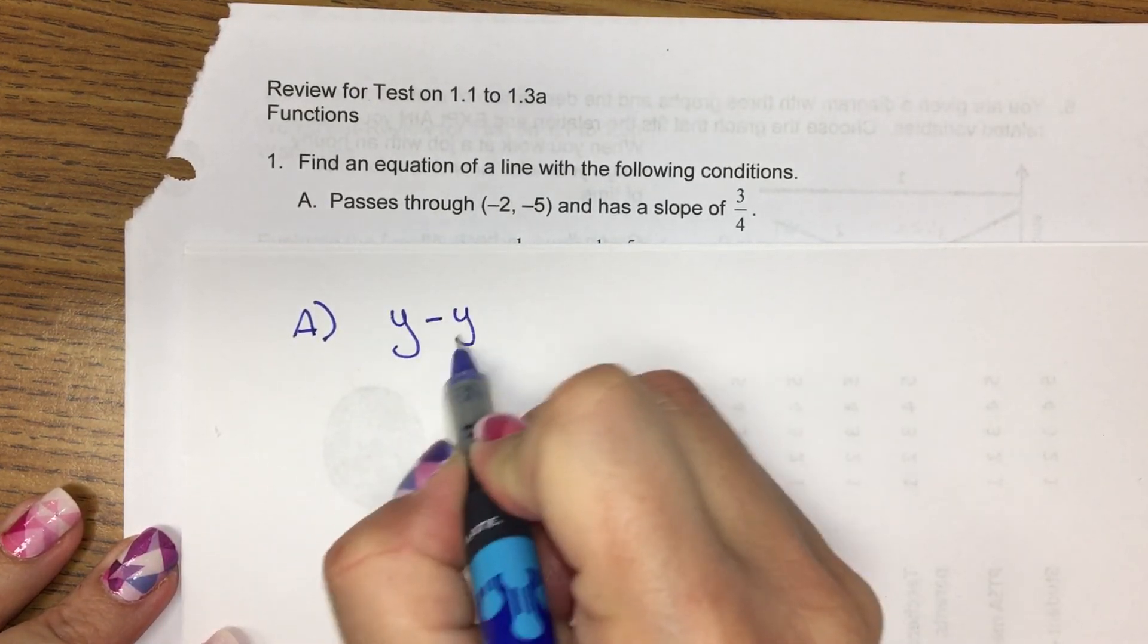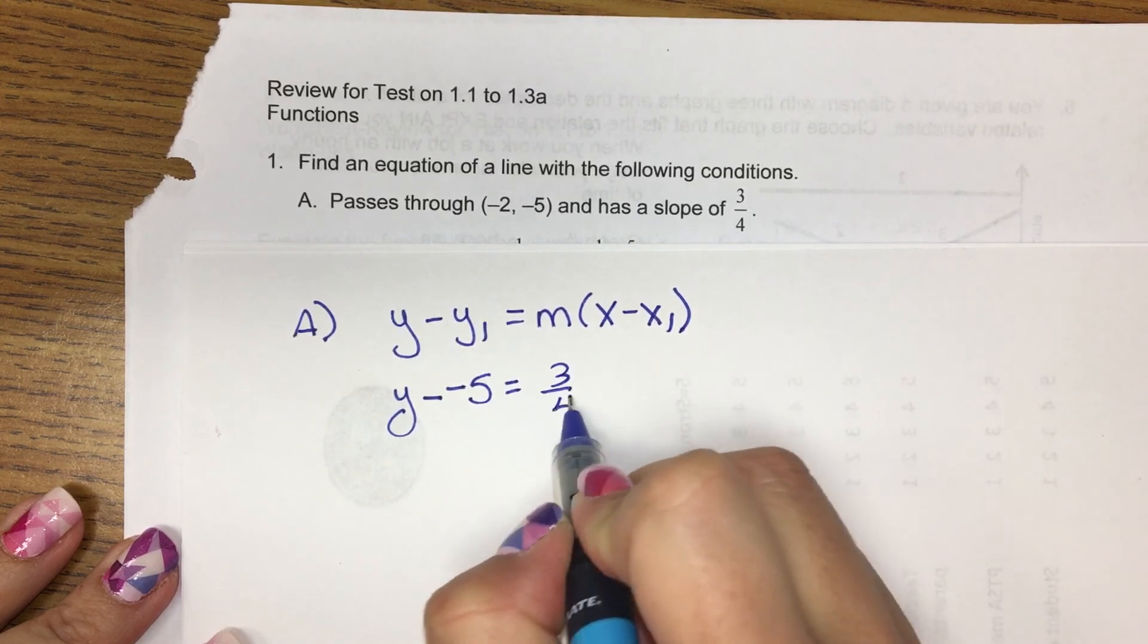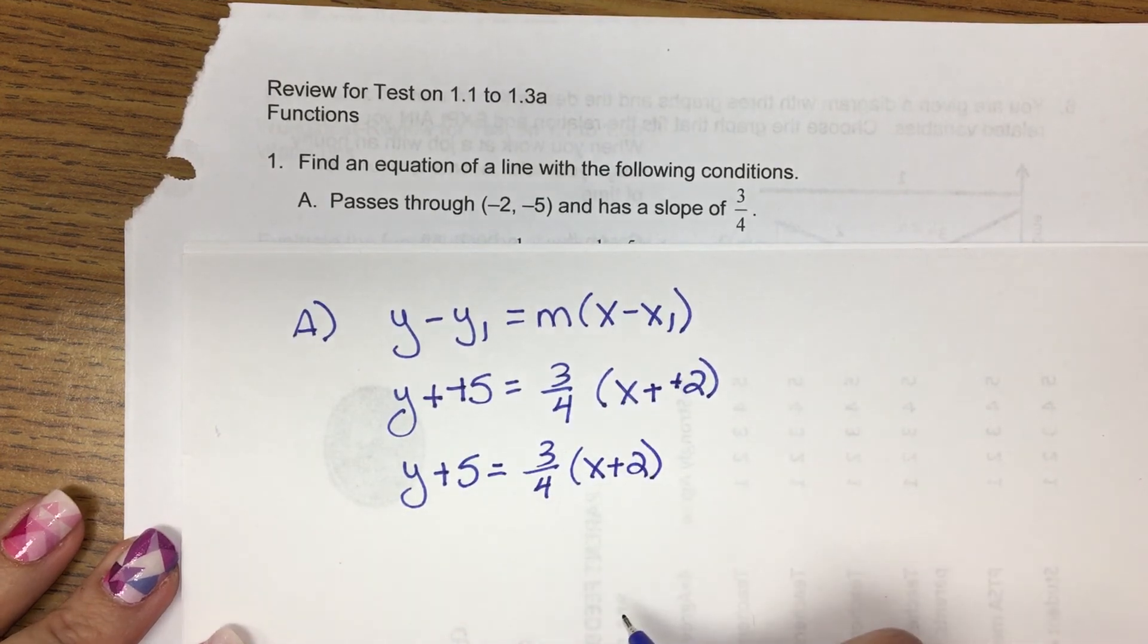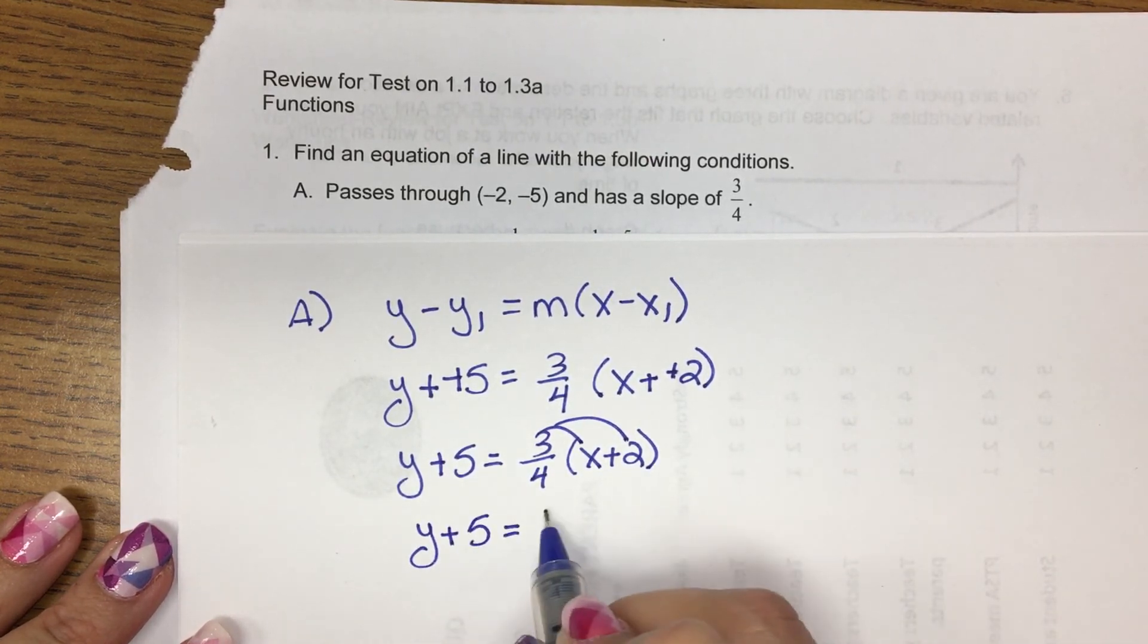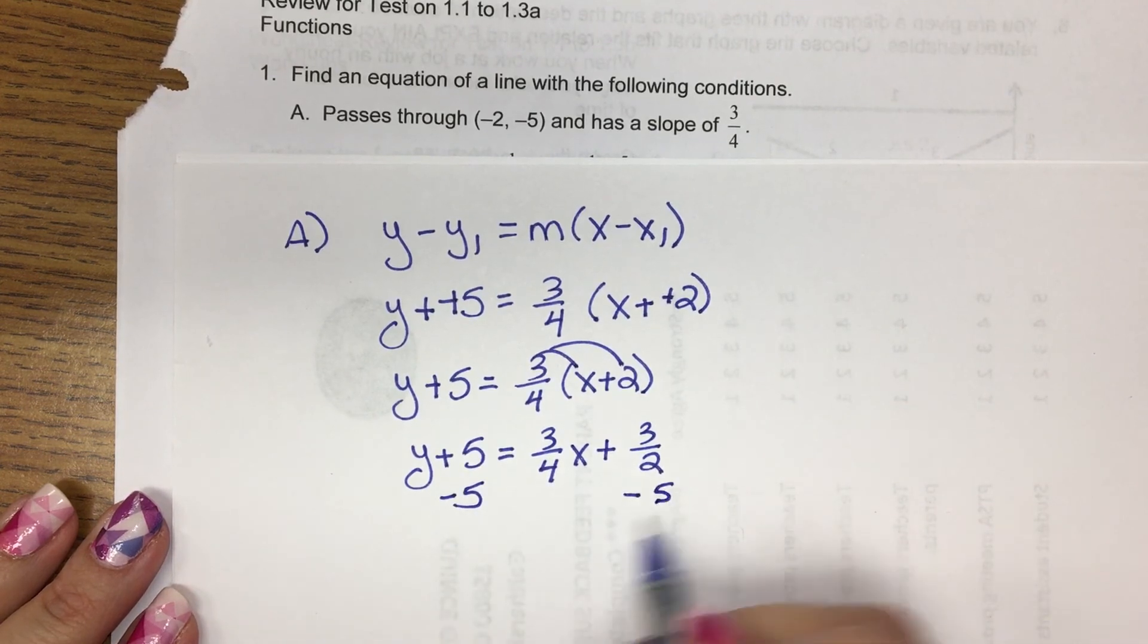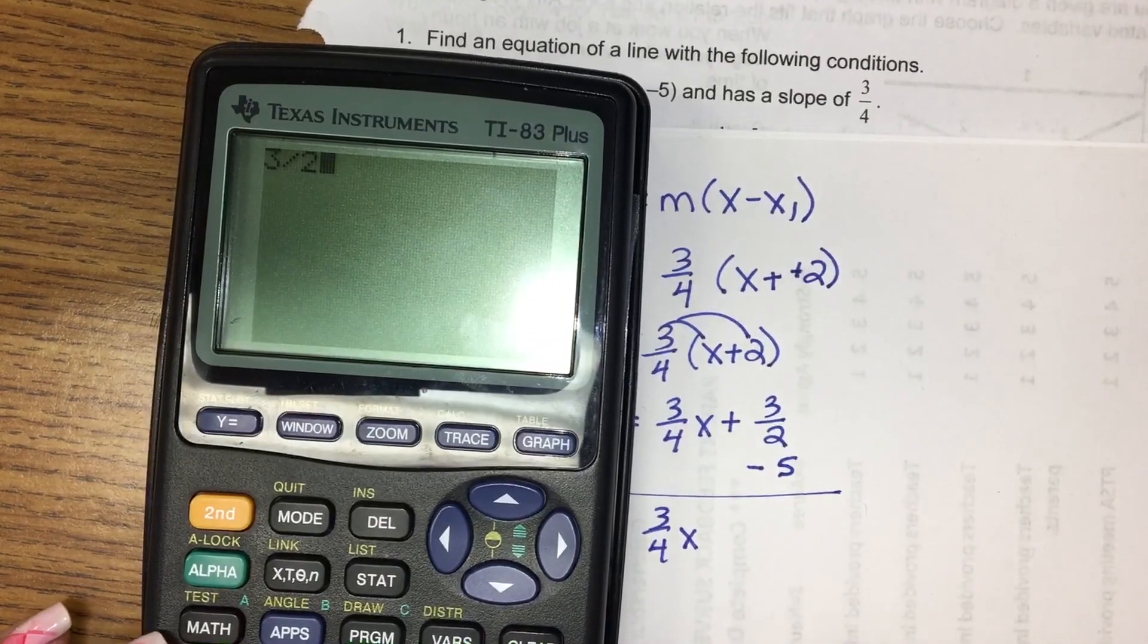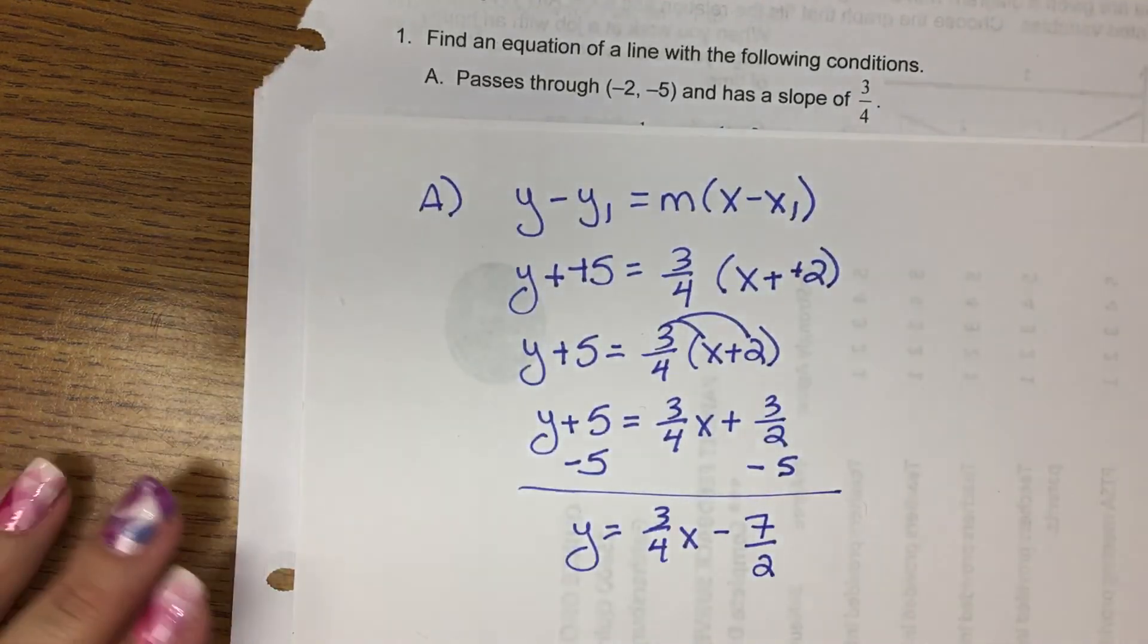I'm going to use point-slope form. So we've got y minus negative 5 equals m times x minus negative 2. So any minus and negative is really plus. So this is the equation in point-slope form. But if you look at the answer key, it's in slope-intercept form. So what we have to do is multiply by 3 fourths. You can use your calculator to multiply that. And then we're going to subtract 5. So if you're going to use your calculator, we'll go 3 over 2 minus 5. And then math, enter, enter, gives us minus 7 over 2. And this is the answer.